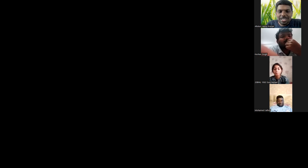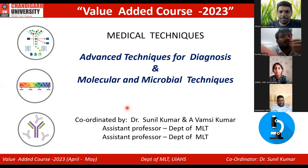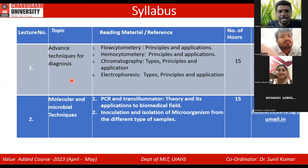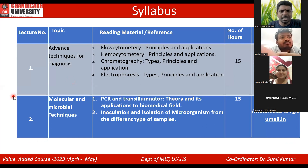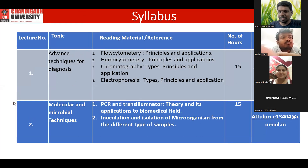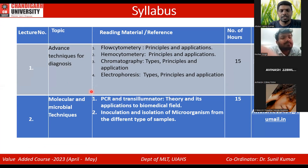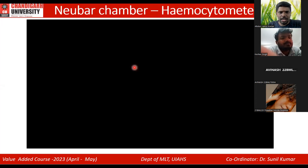So far we discussed about flow cytometry and hemocytometry. We already know that hemocytometry is for counting blood cells, or any cells can be detected by it. Then we discussed flow cytometry, where cells are detected at a rapid speed. Now we move to chromatography — a really interesting technique.